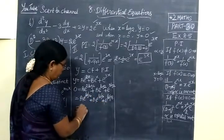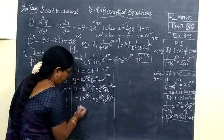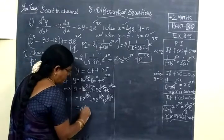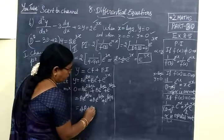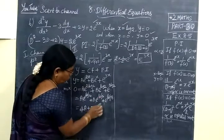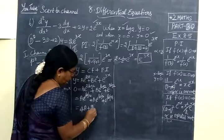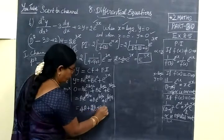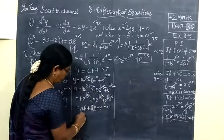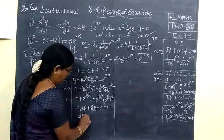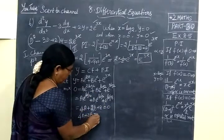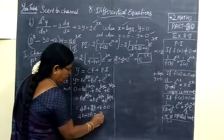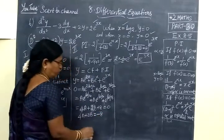So 4A plus 2B plus 8 = 0. So 4A plus 2B = -8. This is equation 1.